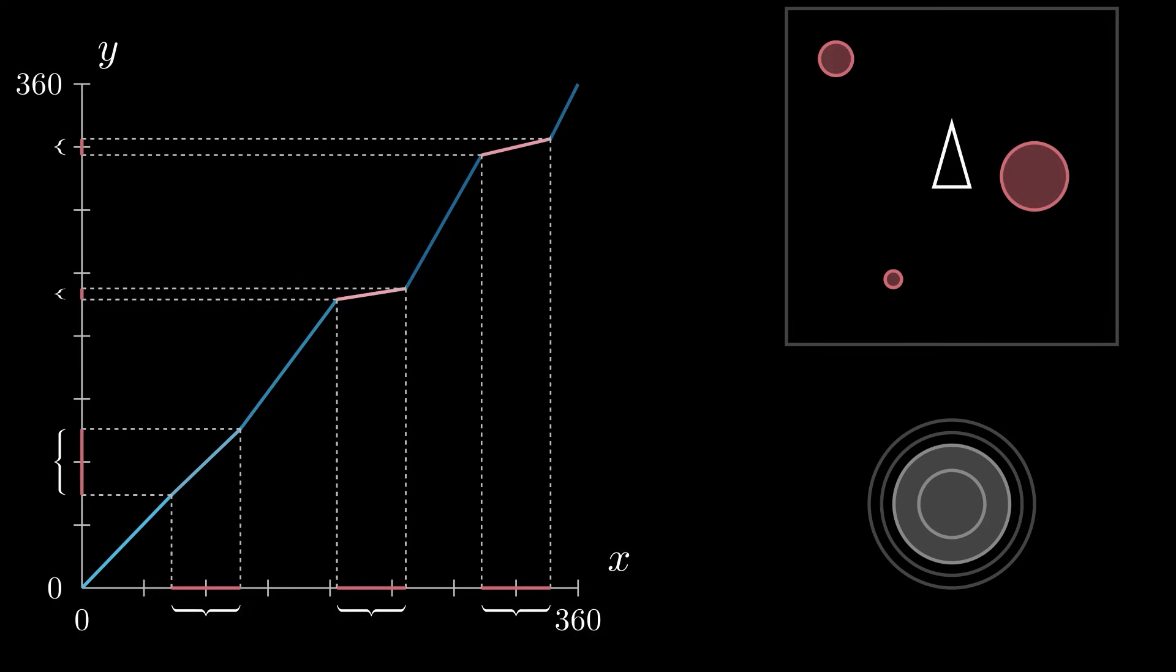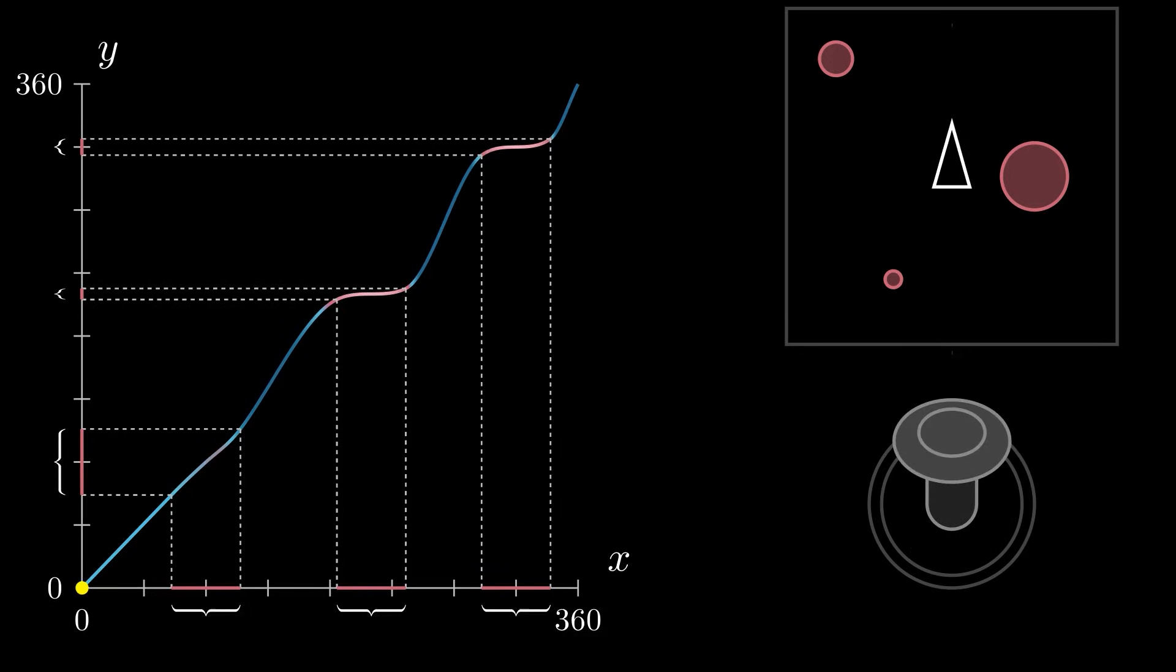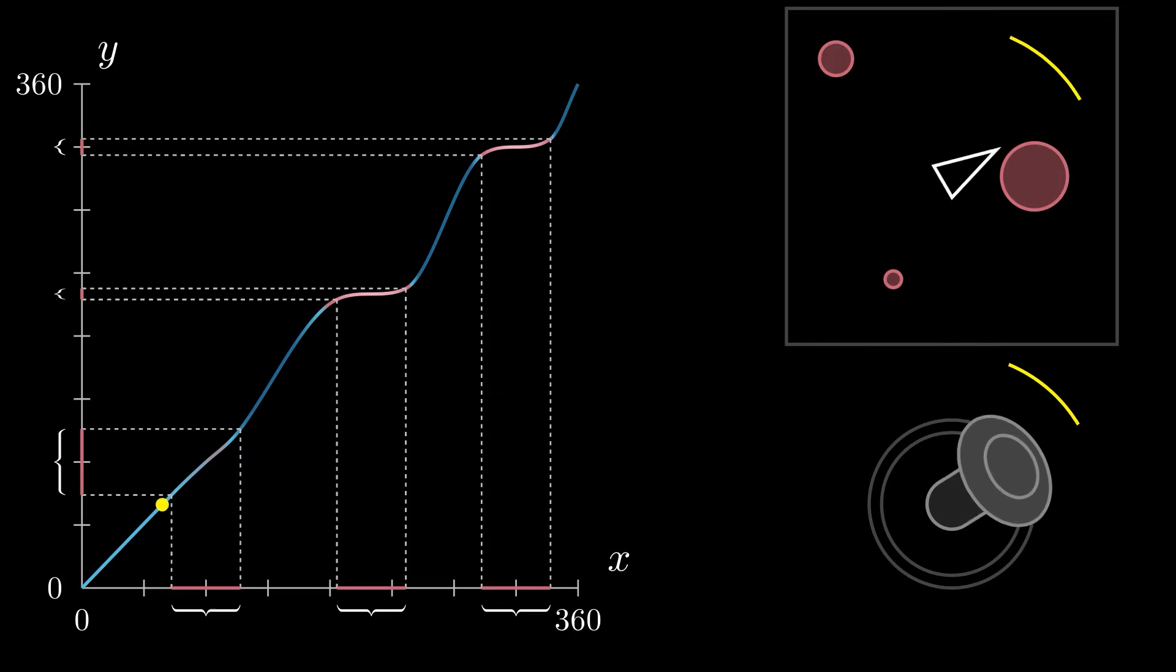For example, we may like to smooth the curve to reduce the jarring effect of a sudden change of sensitivity as we aim toward a target.